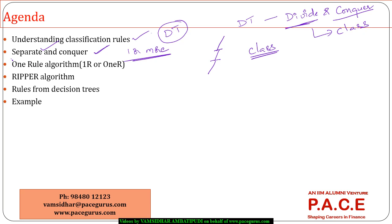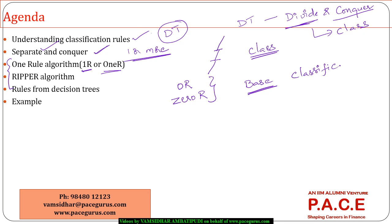We will look at two important algorithms: the One Rule algorithm, also called One-R, and before that, Zero-R, which is a baseline with no rules at all. In Zero-R, I look at the base classification accuracy — classifying all instances into the maximum frequency class.